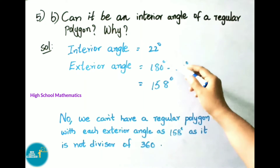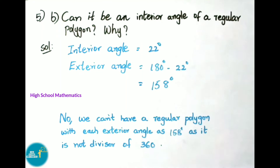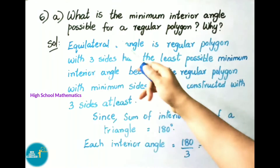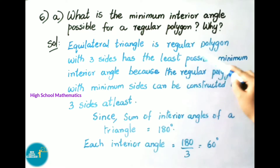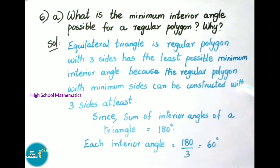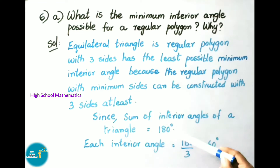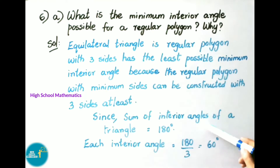Question 6A: what is the minimum interior angle possible for a regular polygon? An equilateral triangle is a regular polygon with three sides and has the minimum interior angle, because the minimum sides required to construct a regular polygon is three. The sum of interior angles of a triangle is 180 degrees, so each interior angle is 180 divided by 3, that is 60 degrees.